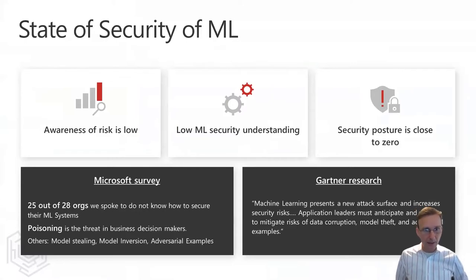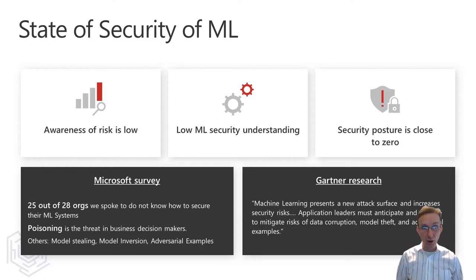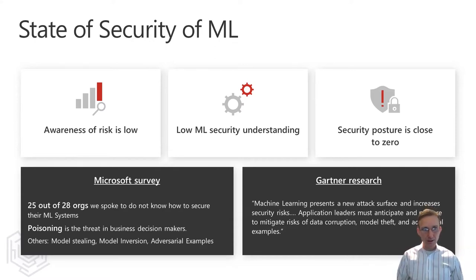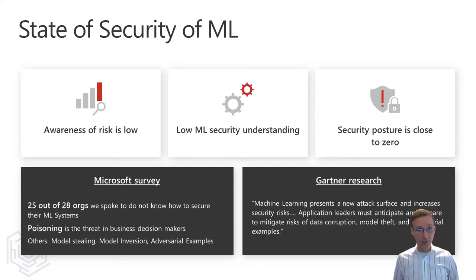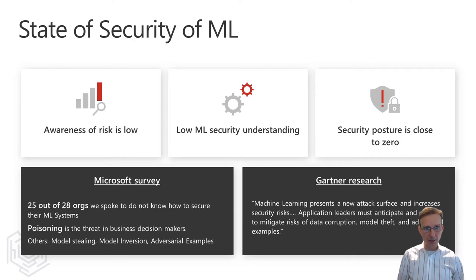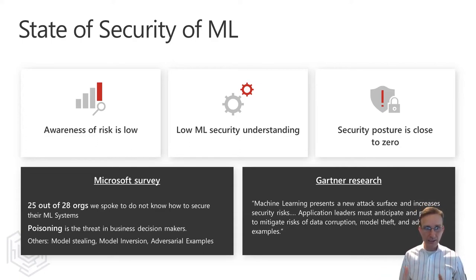So it should come as no surprise that the state of security of ML is relatively low. As my colleagues at Microsoft discovered in a recent survey of organizations, awareness — or at least the priority — of the security risks to ML is low. It was judged as too futuristic, especially when compared with pressing traditional security threats. Even as ML researchers advance the state of our understanding, there are still fundamental theory gaps about what makes ML secure. As a result, our collective security posture is close to zero. In the Microsoft survey, almost 90% — 25 of 28 organizations spoken to — did not know how to secure their ML systems. That is a risk especially applicable to non-security applications of ML, for which adversaries can cause magnified security risks in domains where people aren't thinking about security first.